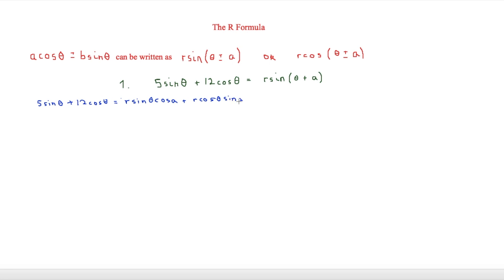The next step is to compare the coefficients of sin theta and cos theta. There is a sin theta on the left and a sin theta on the right, so we can say that 5 is equal to r cos a. Then we have a cos theta on both sides, which means 12 is equal to r sin a.